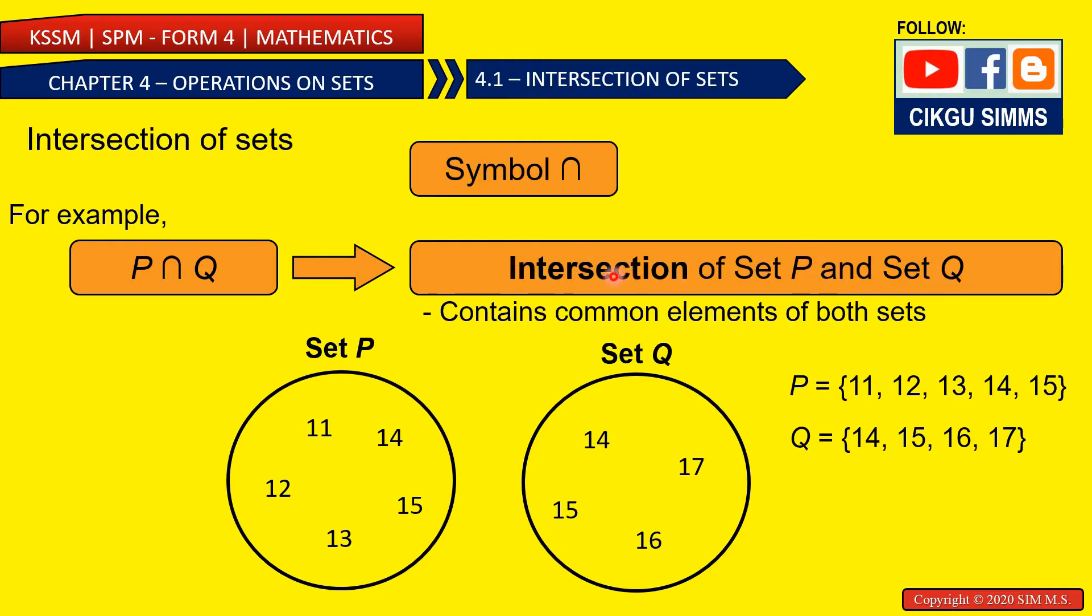So the intersection are the common things, the common elements. So here, we have an example. This is set P. The elements is 11, 12, 13, 14, and 15. So I can return like this. Set P is equal to, and then inside this bracket are all the elements.